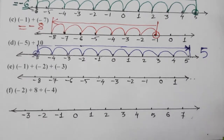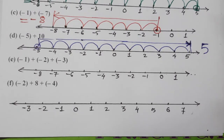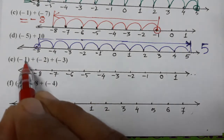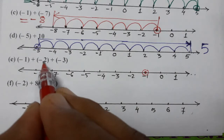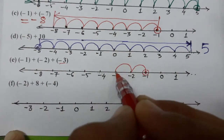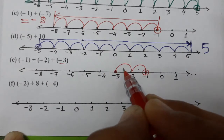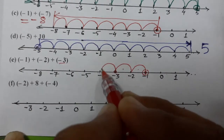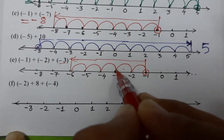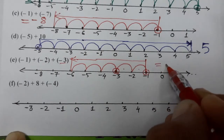Now (e): (-1) + (-2) + (-3). All are negative. We start with minus 1. Then minus 2 means move two points to the left — one and two. Then minus 3 means move three more points to the left — one, two, and three. So we reach at minus 6. The answer is minus 6.